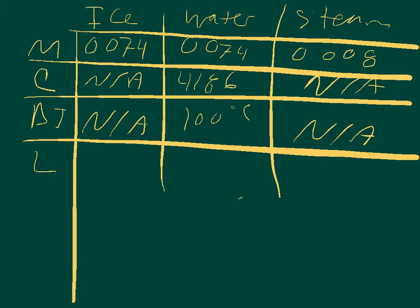For latent heat, we only need to know that for the phase changes. Latent heat of ice is 333,000 joules per kilogram. And for steam, it is 2,260,000 joules per kilogram.